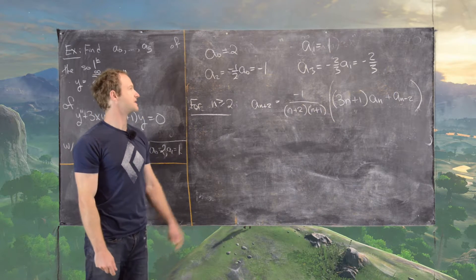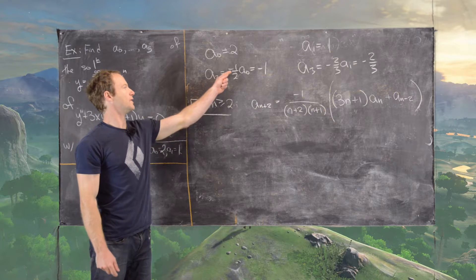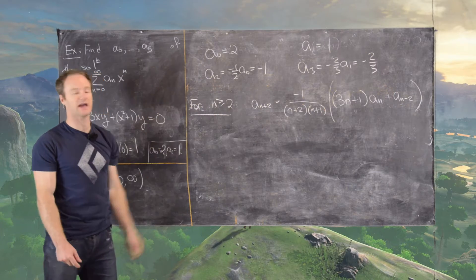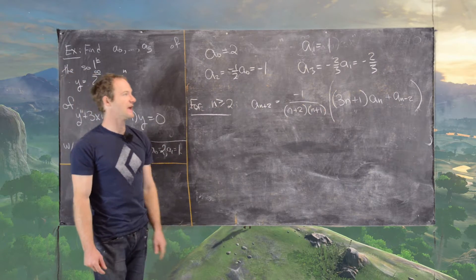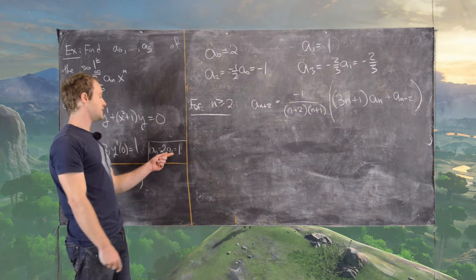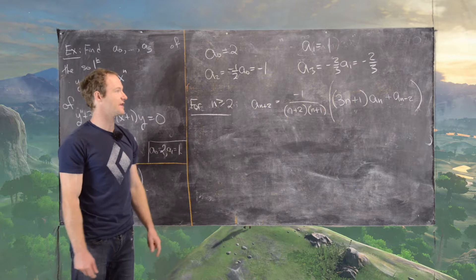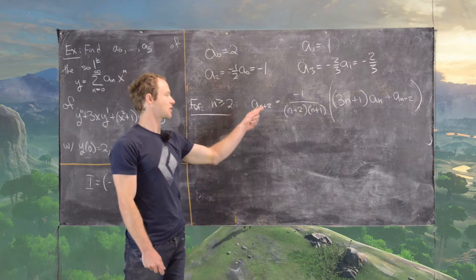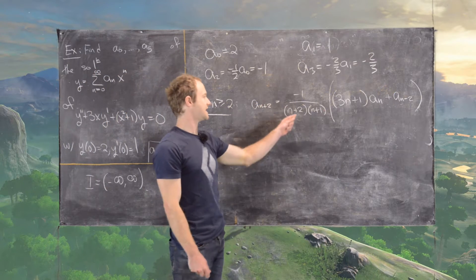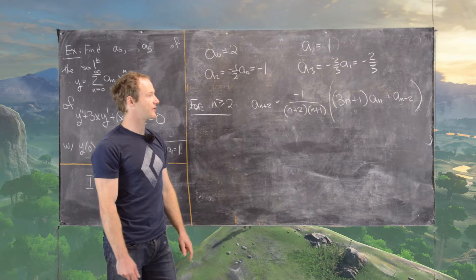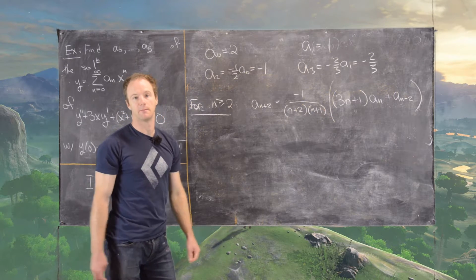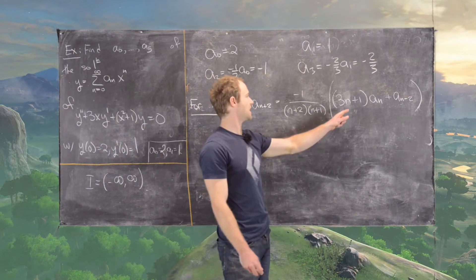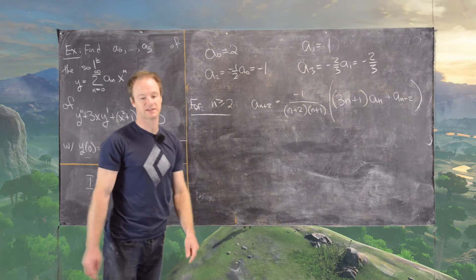Summarizing: from the constant term, a_2 = −(1/2)·a_0. Since a_0 = 2, we get a_2 = −1. From the x coefficient, a_3 = −(2/3)·a_1. Since a_1 = 1, we get a_3 = −2/3. For n ≥ 2, the recursion is: a_(n+2) = −1/[(n+2)(n+1)] · [(3n+1)·a_n + a_(n−2)]. This writes each new coefficient in terms of the two terms two steps back.